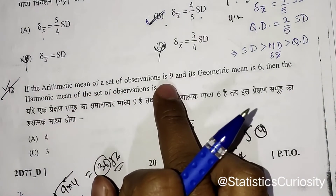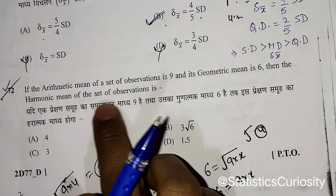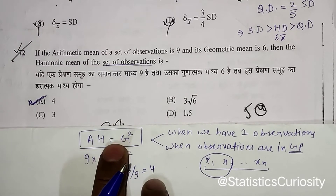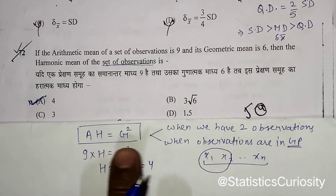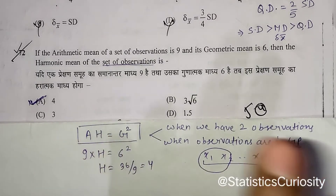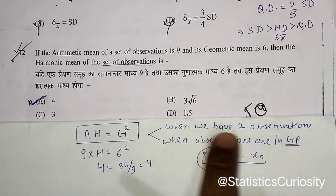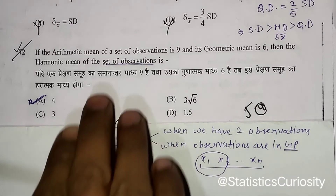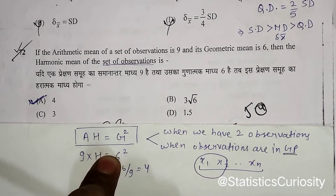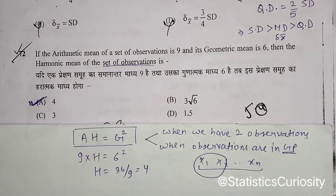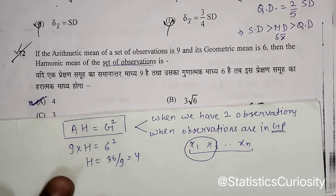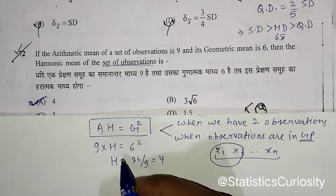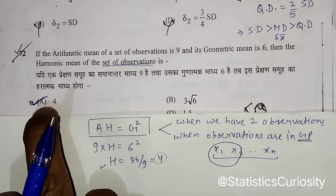Next question: if the arithmetic mean of a set of observations is 9 and its geometric mean is 6, find the harmonic mean. Using the relation AM × HM = GM²: this holds when there are two observations or when the observations are in geometric progression. Substituting AM = 9 and GM = 6: 9 × HM = 36, so HM = 4. The correct answer is 4.